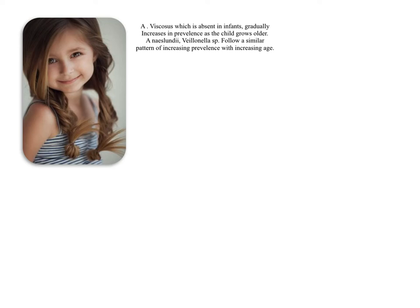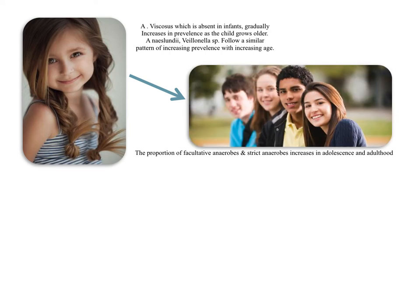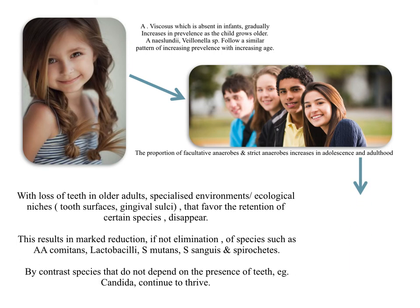A. naeslundii and Veillonella species follow a similar pattern of increasing prevalence with increasing age. Also, the proportion of facultative anaerobes and strict anaerobes increases in adolescence and adulthood.